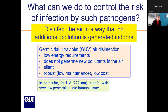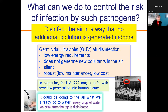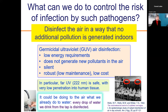Extending this to what is called far UV — at a wavelength of 222 nanometers, which is safe with very low penetration into human tissue — really significantly helps in controlling infection risk. Basically, we could be doing to air what we already do to water: every drop we drink from the tap is disinfected. Looking at an image from a classroom in the 1930s in the US, this technology was already used and demonstrated to be efficient in controlling measles. Since then it has been used in many environments, including commonly in South Africa where tuberculosis is a problem. The technology is there — it just needs social license.